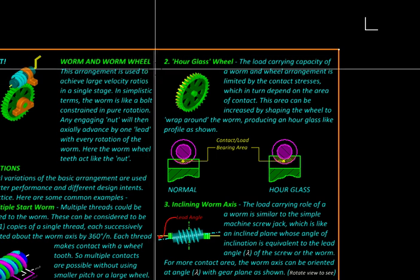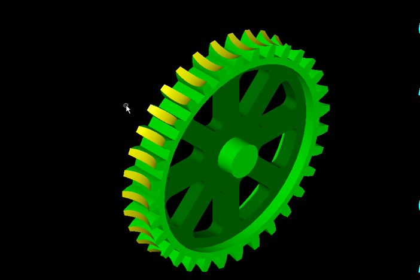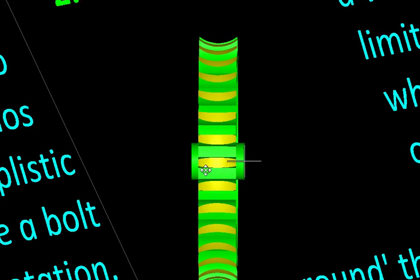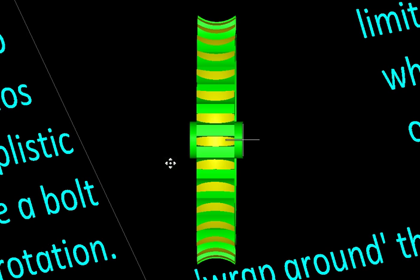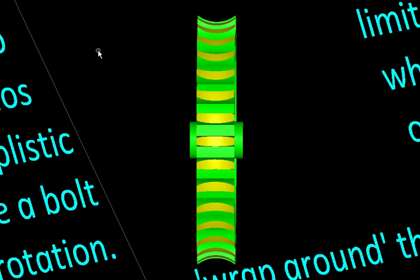Here is another variation done to the same purpose, to increase the load carrying capacity. Here you will see the worm wheel is having its periphery cut in an hourglass-like fashion. In fact this is called an hourglass. Because of this, the contact area between the worm and the worm wheel can be stepped up.